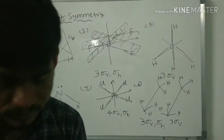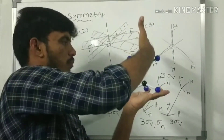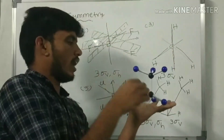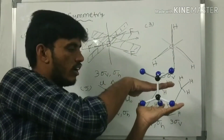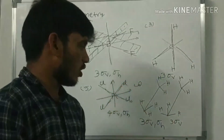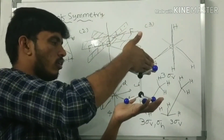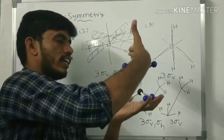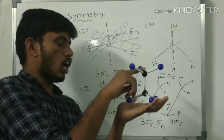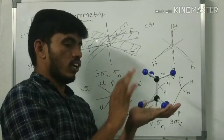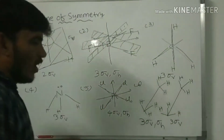For eclipsed ethane, there are three vertical sigma v planes. For the horizontal plane, the carbon atoms are not mirror images of each other in the staggered case, so there is no sigma h. This concludes the discussion on plane of symmetry.